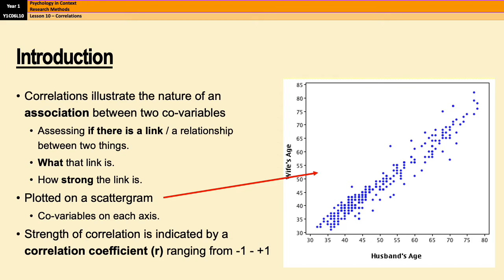The strength of a correlation is indicated by what's known as a correlation coefficient. So that's always designated by the letter R. And the correlation coefficient ranges from minus one to plus one. Minus one is a perfect negative correlation and plus one is a perfect positive correlation. And we'll come on to what that means in a sec.